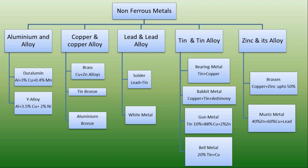Zinc and its alloys — zinc itself is used for coating other materials like iron and steel for corrosion resistance, which is known as galvanizing. The first zinc alloy is brass, which contains almost 50% zinc and is used in hydraulic piping and pumps. Monel's metal is used in manufacturing of tubes, bolts, rods, and electric fuses.